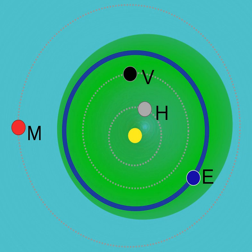The Apollo asteroids are a group of near-Earth asteroids named after 1862 Apollo, discovered by German astronomer Karl Reinmuth in the 1930s. They are Earth-crossing asteroids that have an orbital semi-major axis greater than that of the Earth — greater than one astronomical unit — but perihelion distances less than the Earth's aphelion distance.